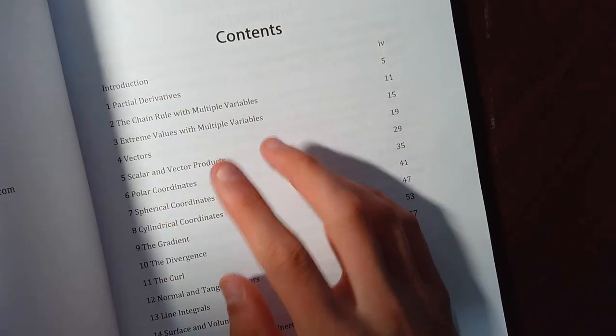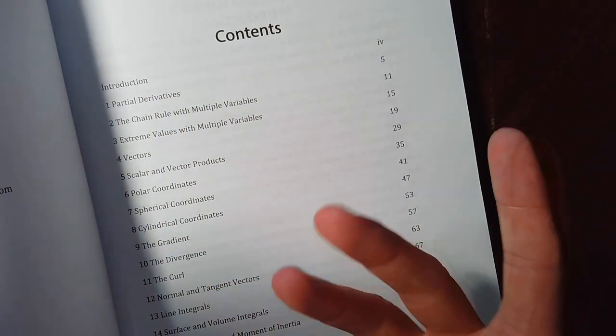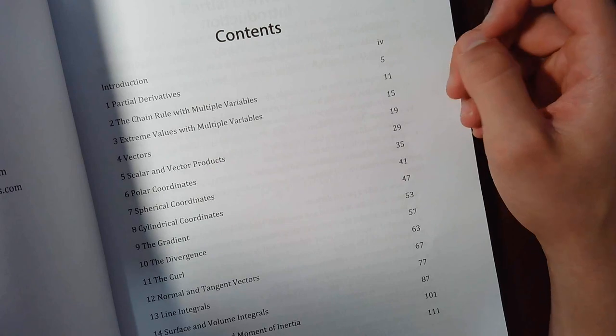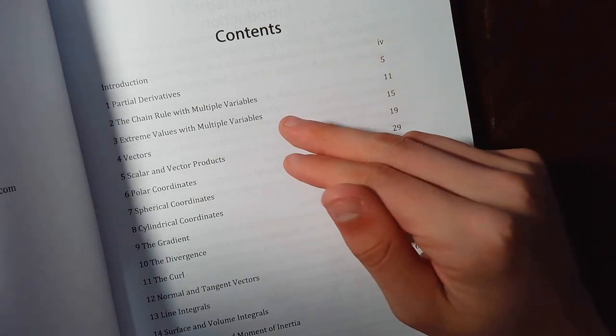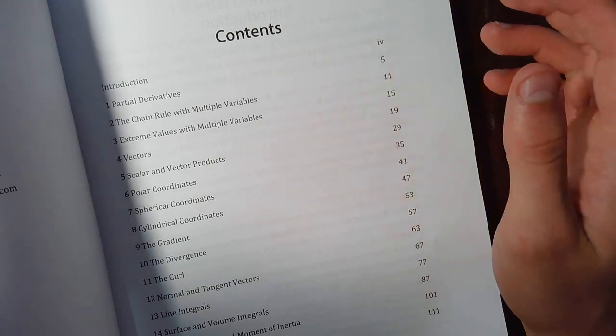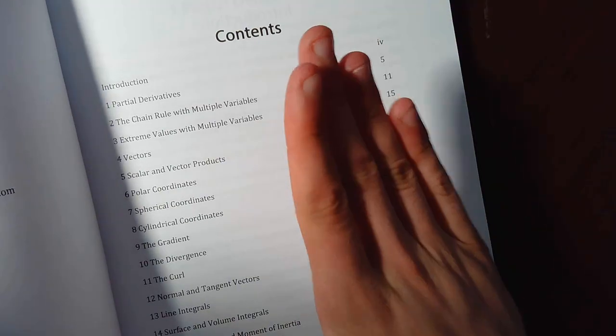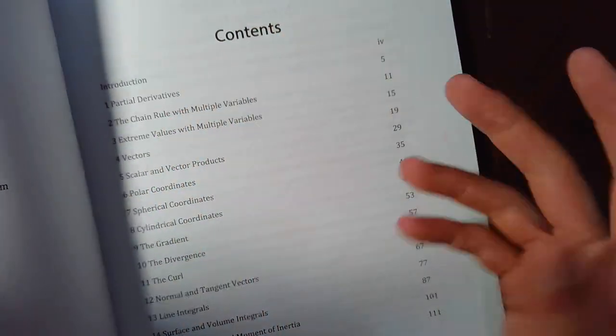As you can see, the contents are there. We have partial derivatives, the chain rule with multiple variables. That's basically like the chain rule with partial derivatives. Extreme values with multiple variables. That means like saddle points because you can have a maximum and a minimum on a 3D curve at the same point.